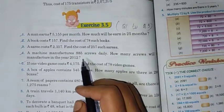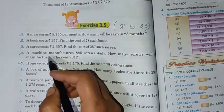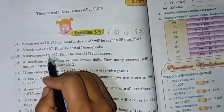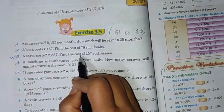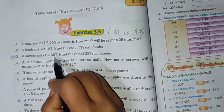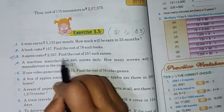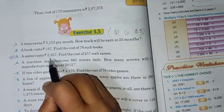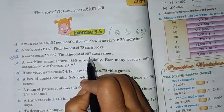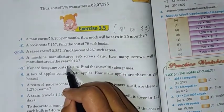Now move to the next question, question number 3. I think you can do this as homework. I will not give you. A saree costs 2,357 rupees. Find the cost of 257 such sarees. So how to do the statement: cost of 1 saree is equal to this. Then cost of 257 sarees is equal to 2,357 rupees multiplied by 257. Try to do it on your own, children.